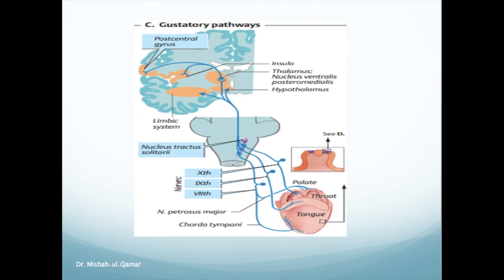The third-order neurons are in the posteroventral nucleus of the thalamus. Their axons pass rostrally to the ventromedial nucleus of the thalamus, and then axons from the third-order neurons project into the parietal lobe, where the signals finally reach the cerebral cortex.